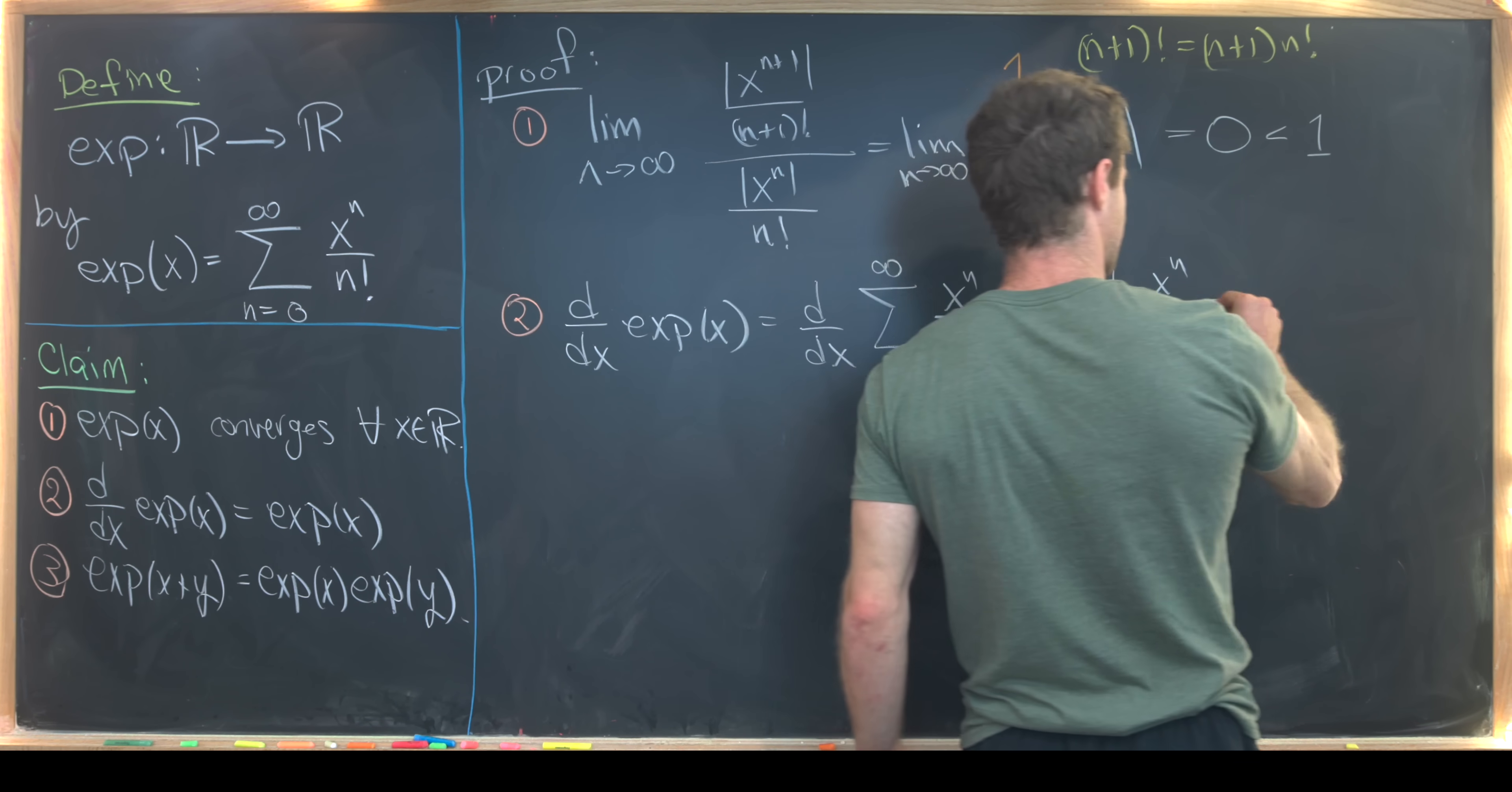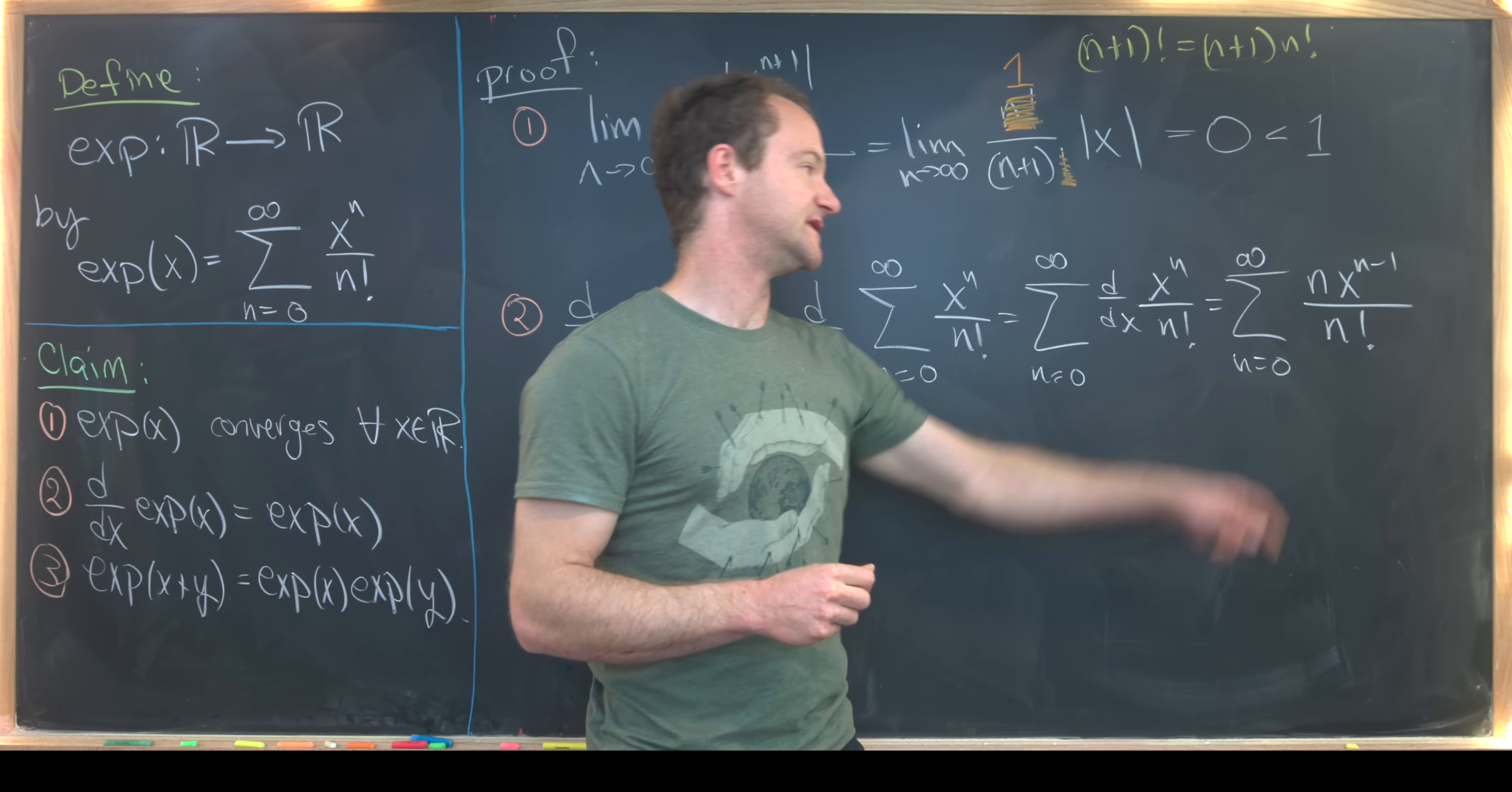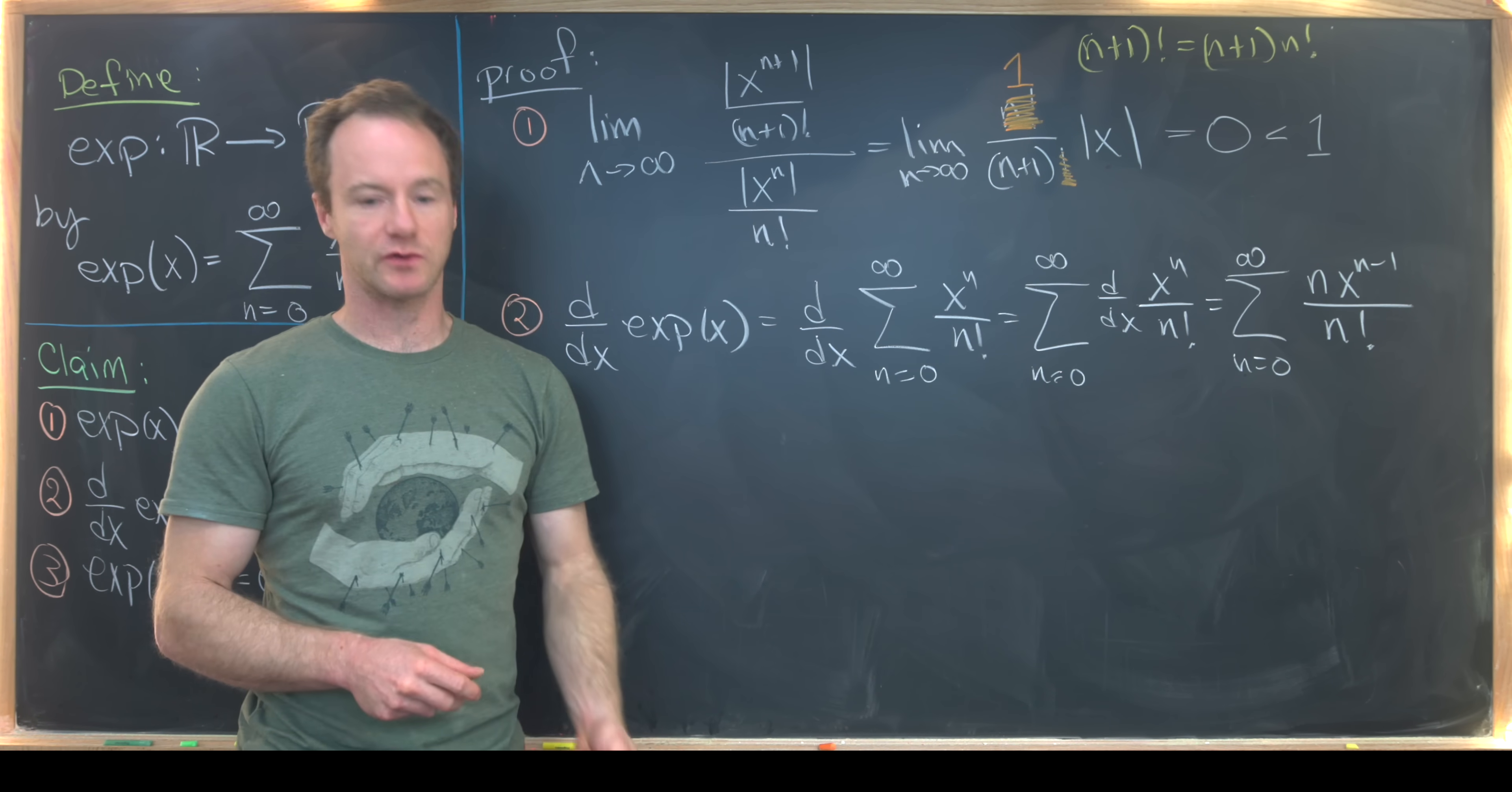But that's going to give us the sum as n goes from 0 to infinity of n times x to the n-1 all over n factorial. But we probably want to re-index this a little bit. Because at n equals 0, something weird is happening. Notice 0 factorial is 1, but then we've got a 0 in the numerator. So that's actually the only time we don't get a cancellation like this. We didn't worry up here because we were letting n tend towards infinity. So it was bound away from 0.